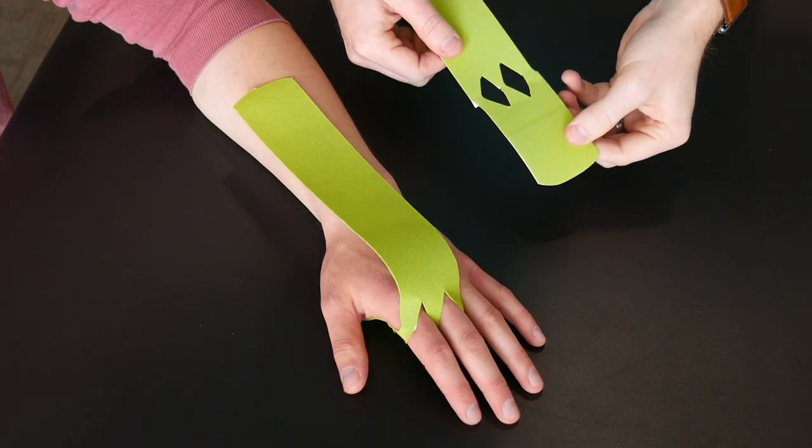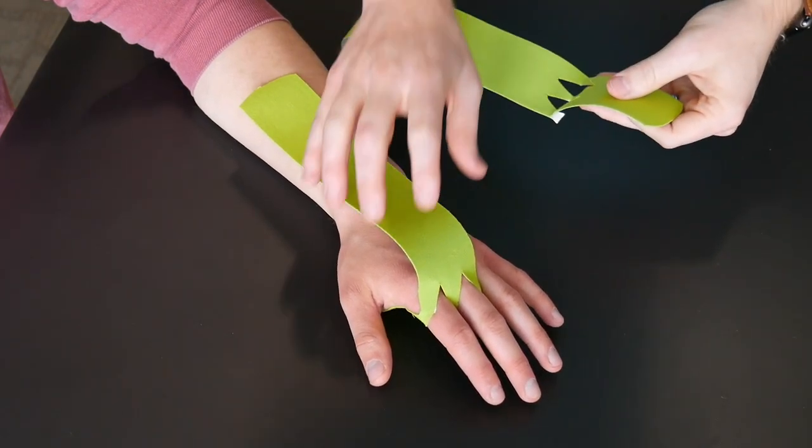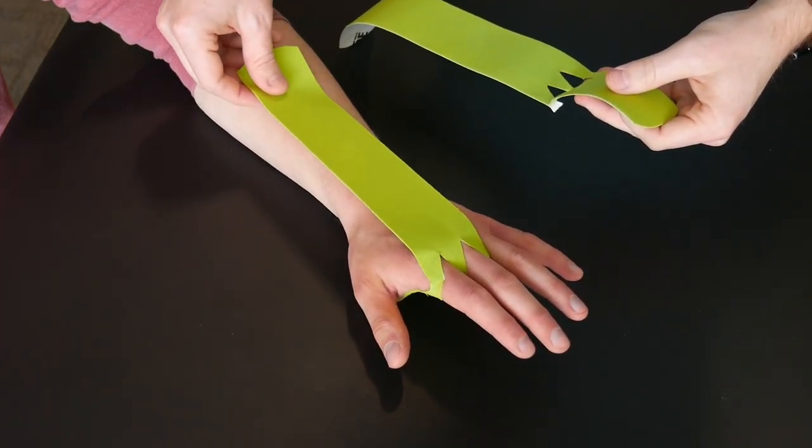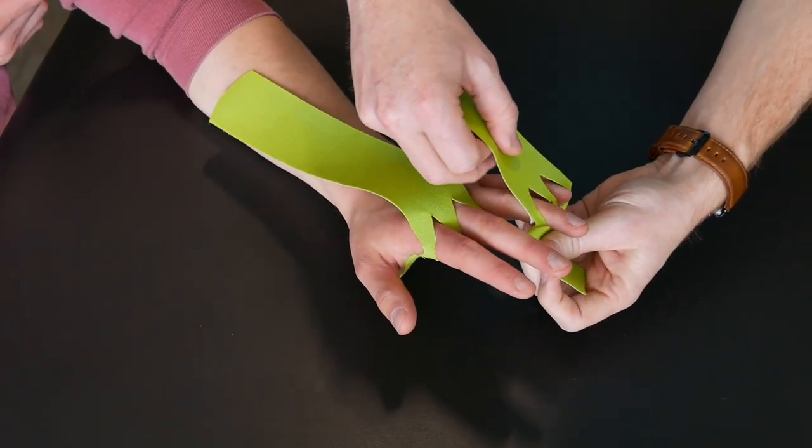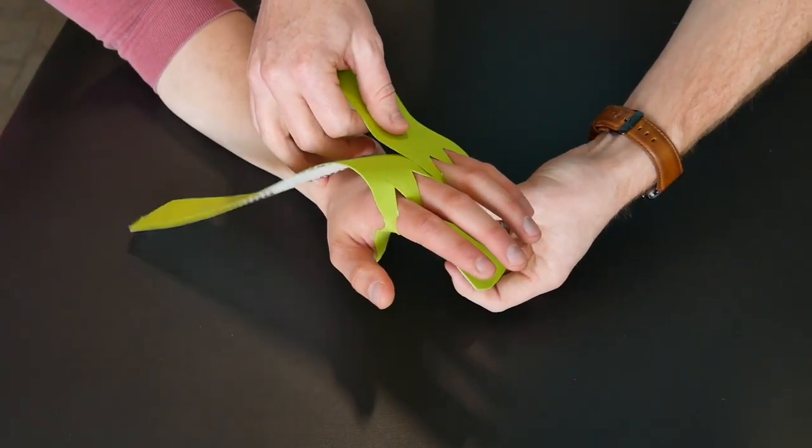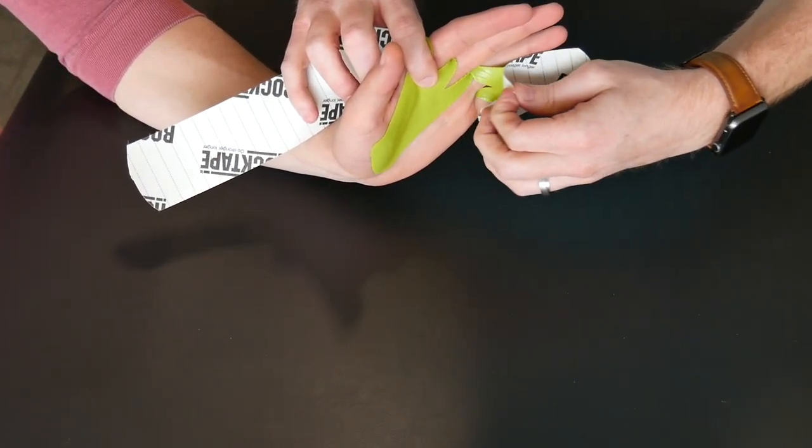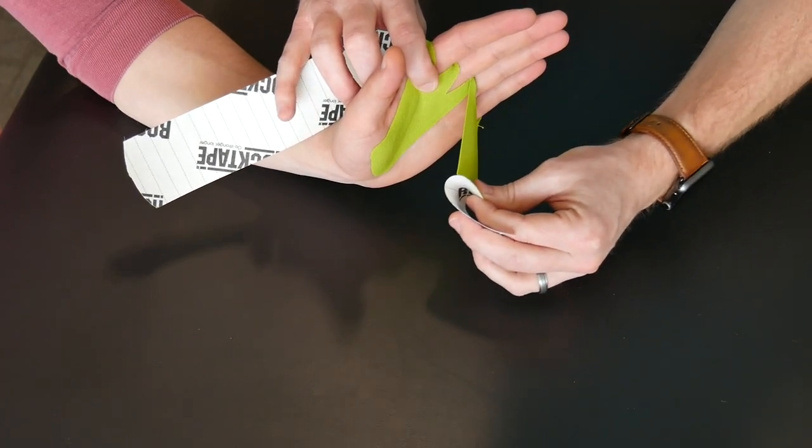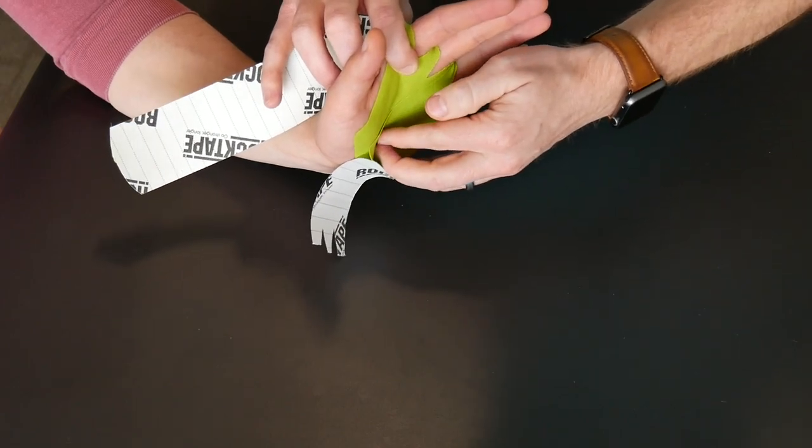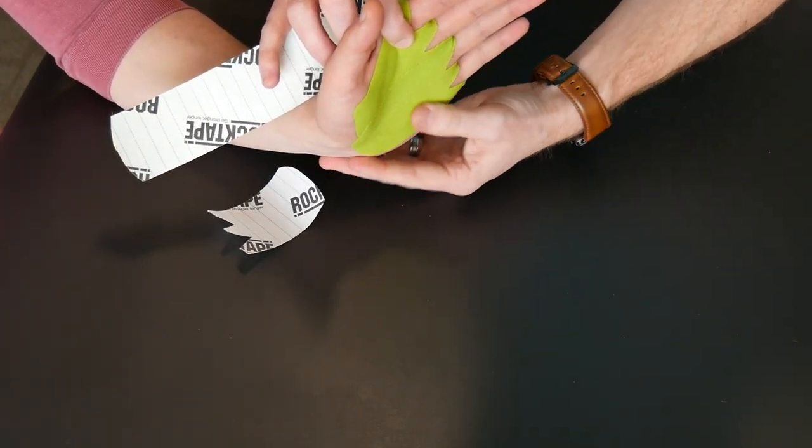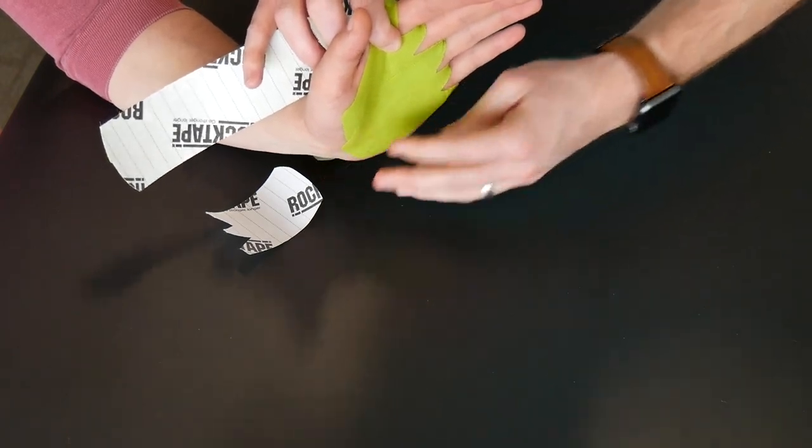So I've went ahead and prepped the other piece of tape as well. So we can go ahead and thread that so we can pull both of these at the same time. So let's go ahead and take his ring and small finger, thread that through. Going to take backing off of that tape and again anchor it to the palm of the hand on the anterior surface. Rub that in really well.